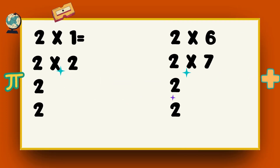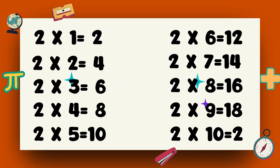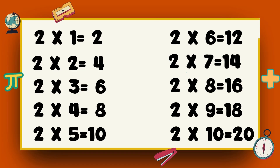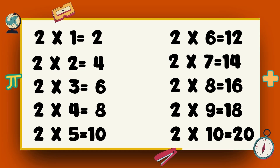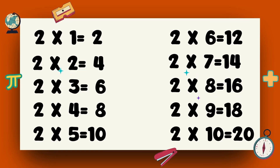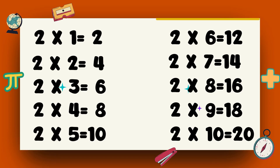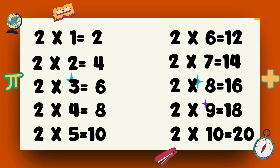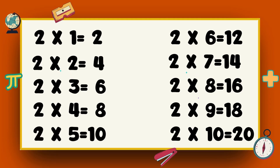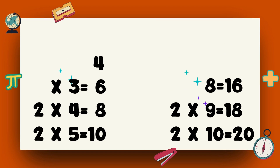Let us repeat once again. 2 1s are 2. 2 2s are 4. 2 3s are 6. 2 4s are 8. 2 5s are 10. 2 6s are 12. 2 7s are 14. 2 8s are 16. 2 9s are 18. 2 10s are 20.